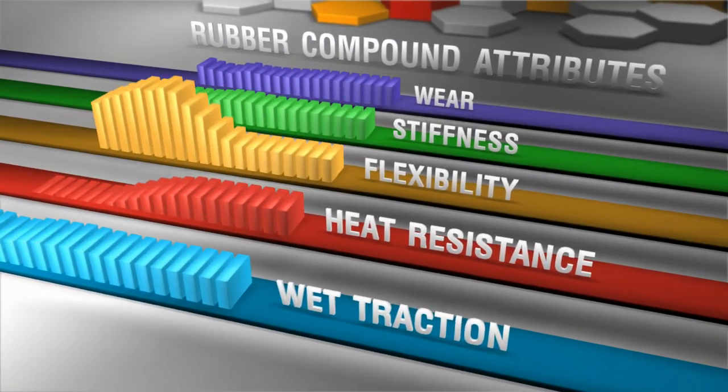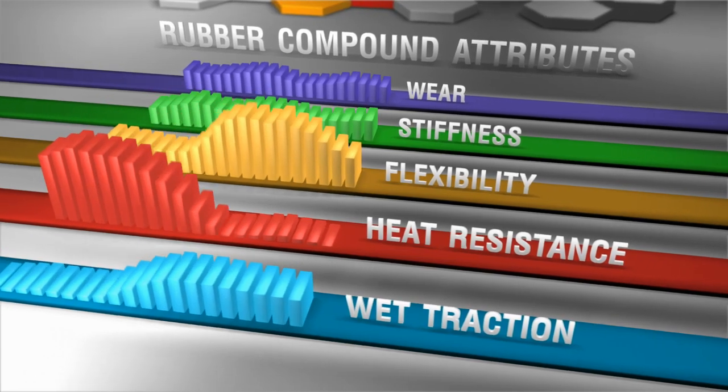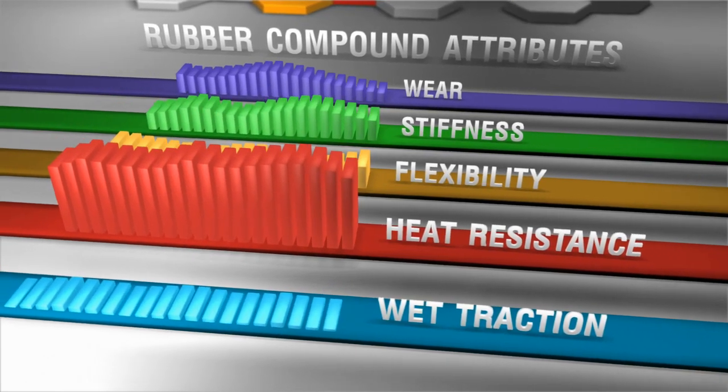A traditional material may be very flexible but lack heat resistance, or it might have great heat resistance but poor wet traction.